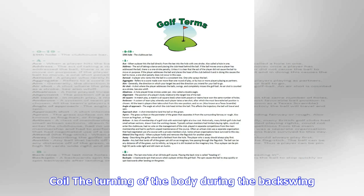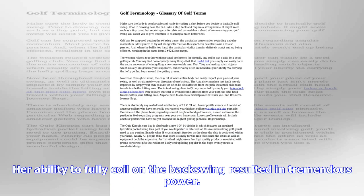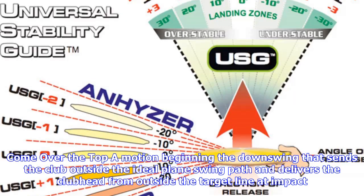Closed club face: the position formed when the toe of the club is closer to the ball than the heel, either at address or impact, which causes the club face to point to the left of the target line. Her closed club face resulted in her missing several approach shots to the left of the green.